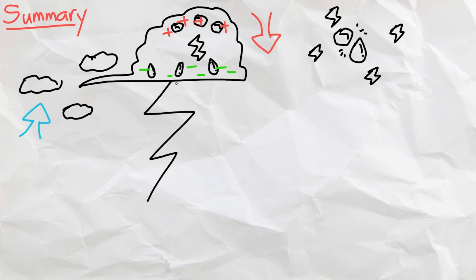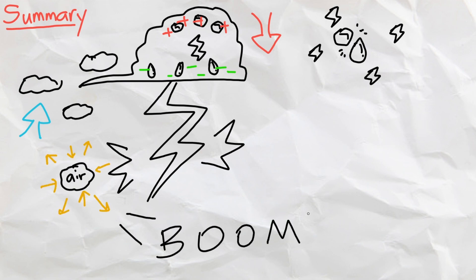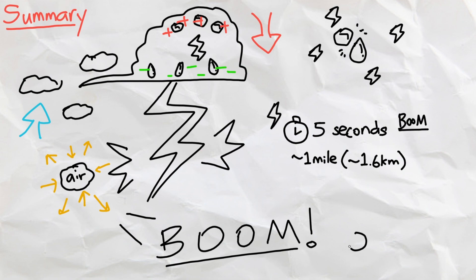And because lightning is five times hotter than the surface of the sun, the air it struck very rapidly expands and contracts, creating a crisp boom sound we perceive as thunder. Every five seconds between a lightning and a thunder equates to around one mile. So if we hear thunder only ten seconds after seeing lightning, we should probably head inside since the lightning is only two miles or around three kilometers away from us.